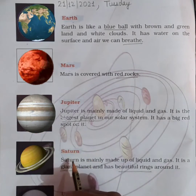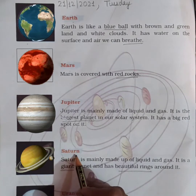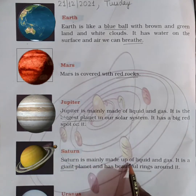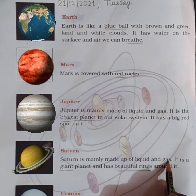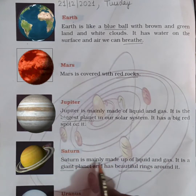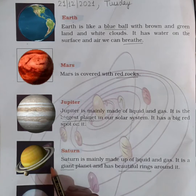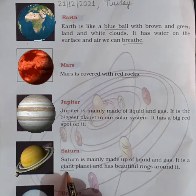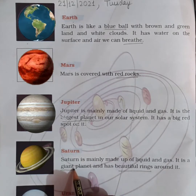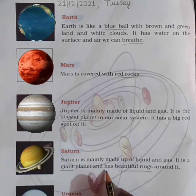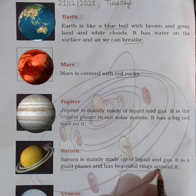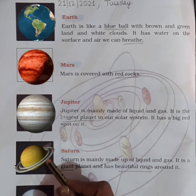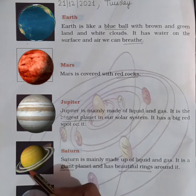Now coming to the sixth planet, Saturn. Saturn is mainly made up of liquid and gas. It is a giant planet — giant means Vishal. It has beautiful rings around it, as you can see in this picture.